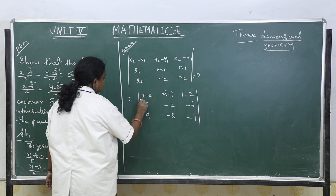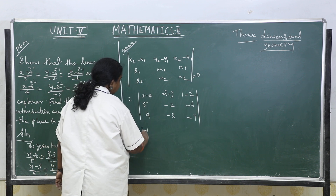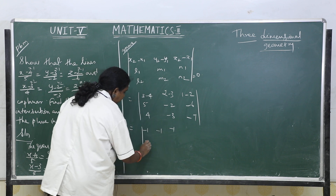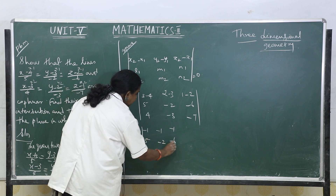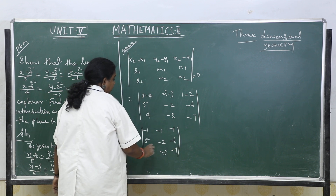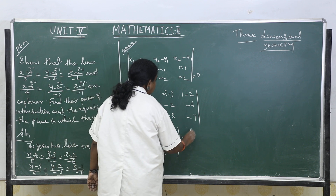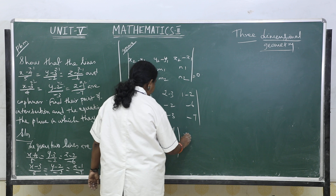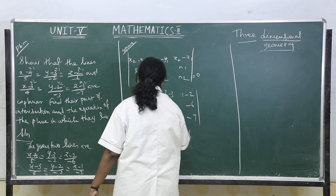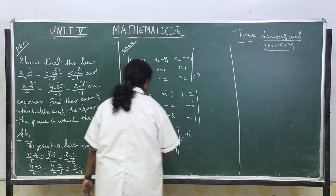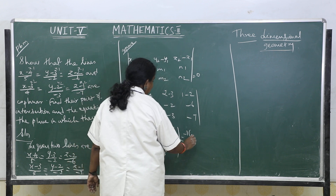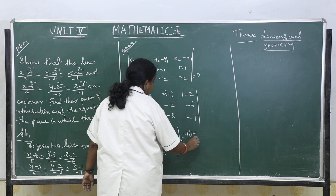We will expand this determinant. The first row is (−1, −1, −1), second row (5, −2, −6), third row (4, −3, −7). Expanding: −1 × [(−2)(−7) − (−6)(−3)] = −1 × [14 − 18] = −1 × (−4). The cofactor for the second element gives −1 × (−35 + 24), and for the third gives −1 × (−15 + 8) giving plus 18 in the expansion.